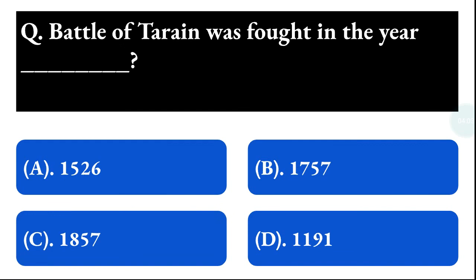Next question: the Battle of Tarain was fought in the year — option A: 1526, option B: 1757, option C: 1857, option D: 1191. The correct answer is option D, that is 1191.